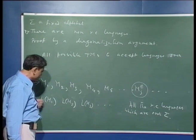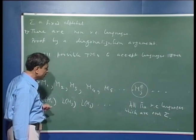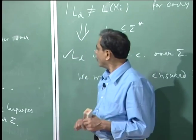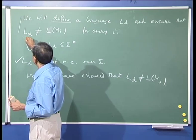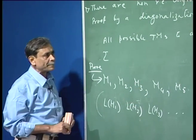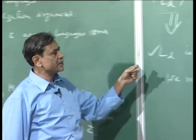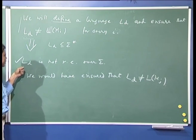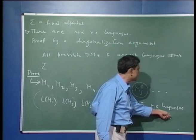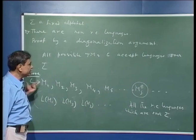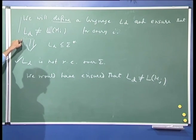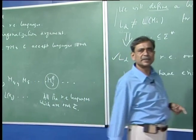The list of corresponding RE languages will also contain all languages which are RE over sigma. Now, what we show by diagonalization is that the language LD — D for diagonalization — is different from each one of these. Therefore LD is not RE over sigma, because had it been an RE language there would have been a Turing machine to accept it, and that Turing machine would have occurred somewhere in this enumeration. By construction, LD is also a language over sigma.